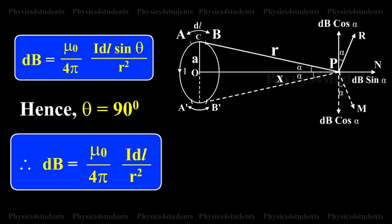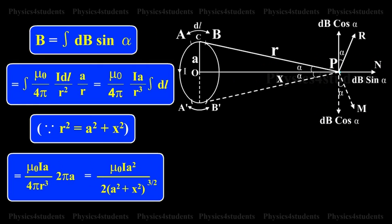So, the total magnetic induction at P due to the entire coil is B is equal to integral DB sin alpha is equal to integral mu naught by 4 pi into IDL by R square into A by R is equal to mu naught by 4 pi into IA by R cube into integral DL.